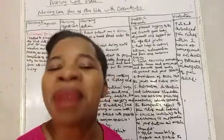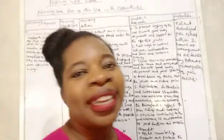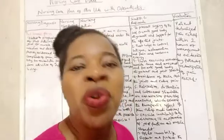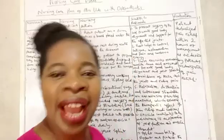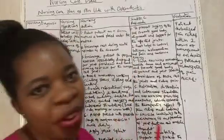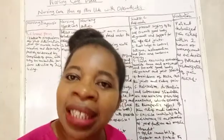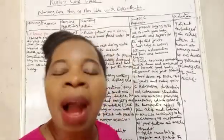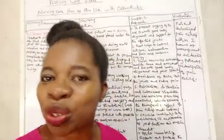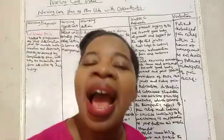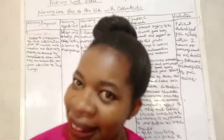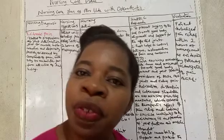Nursing action number six: assist patients with prescribed range of motion exercises. Scientific rationale: exercise contributes to the maintenance and promotion of joint function and muscle strength. Nursing action number seven: apply joint splints. Scientific rationale: splints immobilize, support and protect the involved joints.